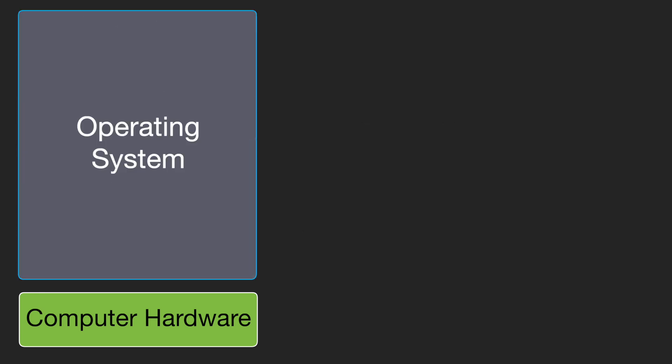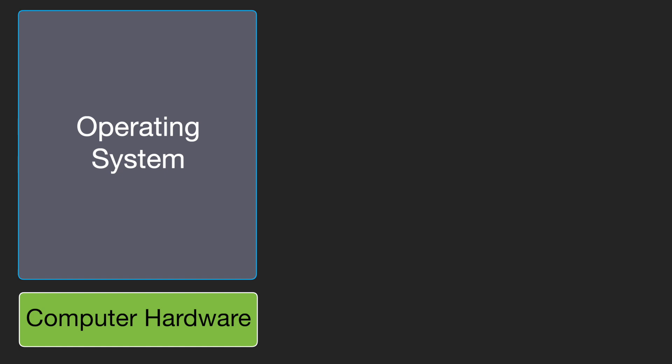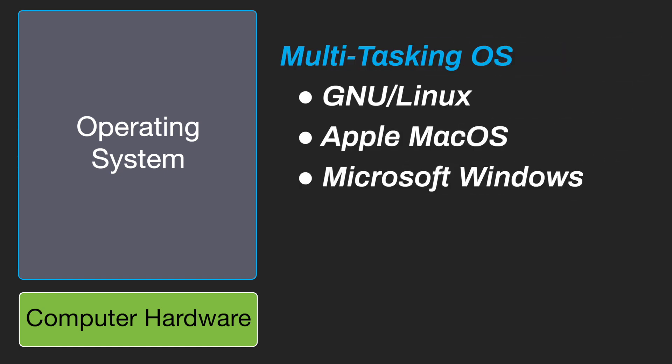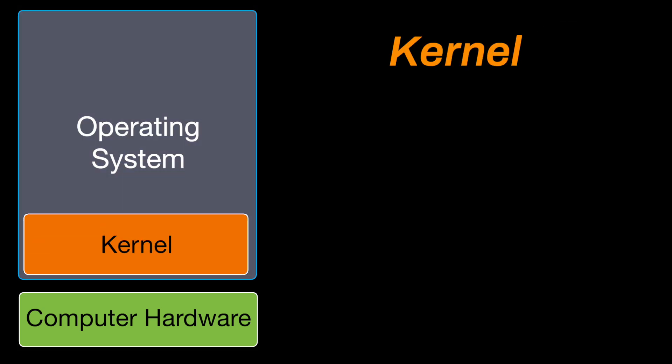On top of the computer hardware sits software — we call that the operating system. Here we're talking about a multi-user, multitasking operating system: Linux, Macintosh, Windows, and the like. The operating system consists of two major parts. The kernel is the core of the operating system, responsible for managing hardware resources and enabling the execution of applications.